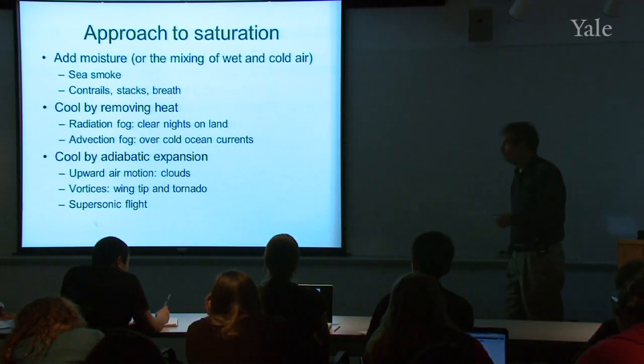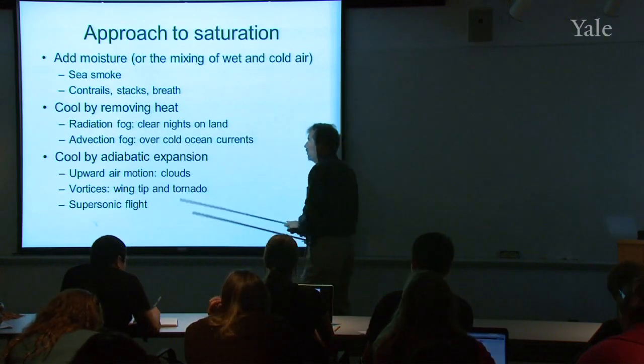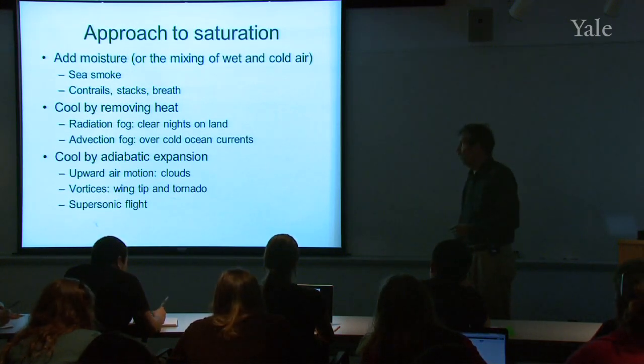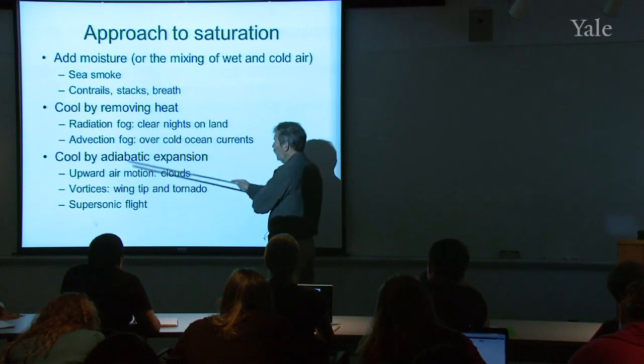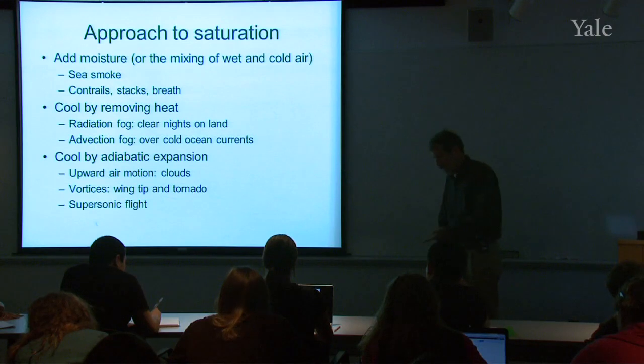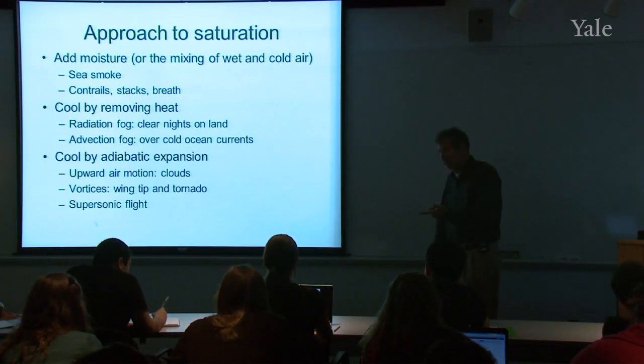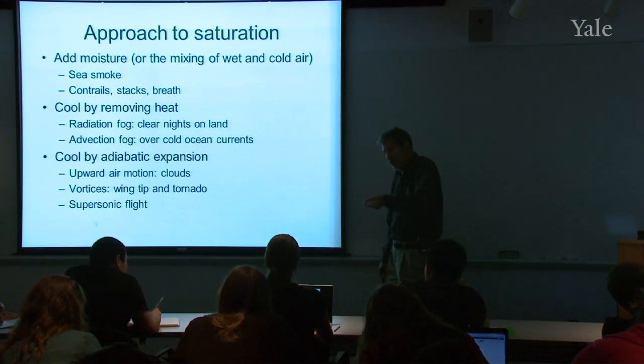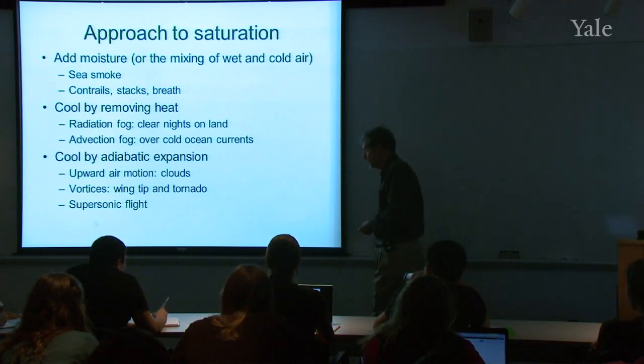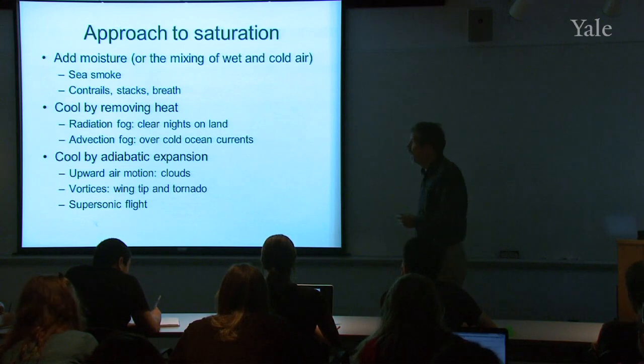I'll show some examples of that, but sea smoke, contrails, stacks. Smokestacks sometimes give off clouds in this way. And human breath, when you breathe out on a cold day, you can create a little cloud using this mechanism of adding moisture. Another way is to cool by removing heat. If you have air that is sub-saturated, but you remove heat, you're going to drop the temperature. If you drop the temperature, you're going to drop the saturation vapor pressure, and you keep doing that, you're going to bring the two together. You're going to bring the amount, the partial pressure of water vapor together with the saturation partial pressure. They'll be equal, and you'll have the saturated condition. The third method is by adiabatic expansion. That is by lifting air parcels up in the atmosphere.